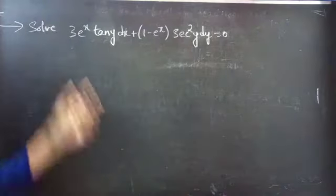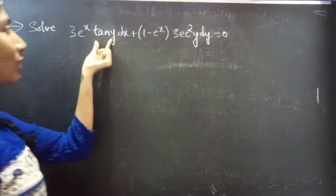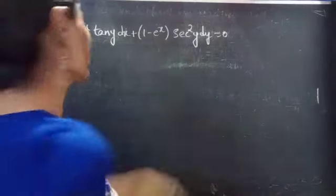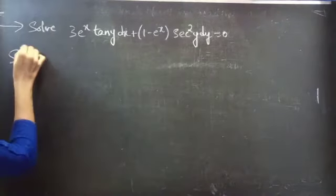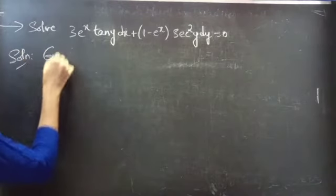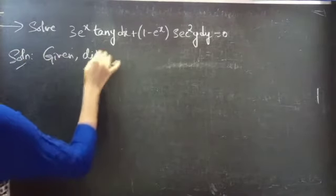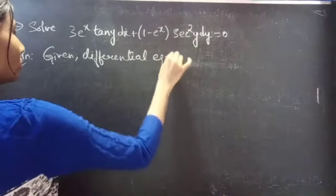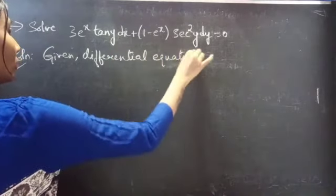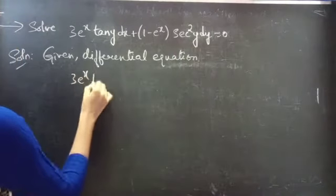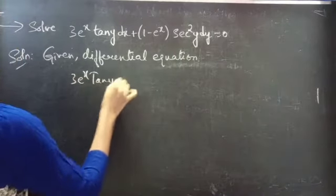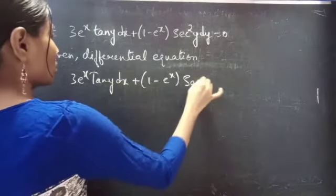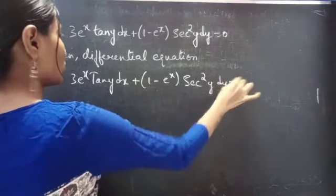Problem: Solve 3 into e^x tan(y) dx plus 1 minus e^x into secant squared y dy equals to 0.